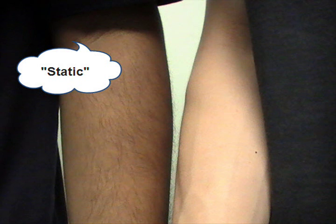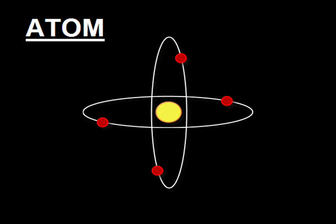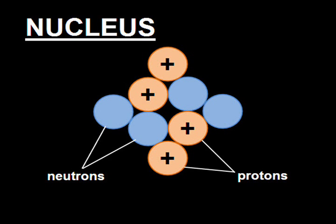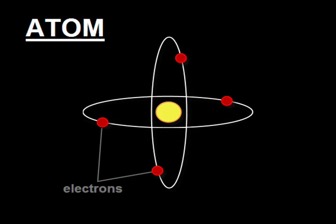So how does static electricity build up? Let me explain it to you. All matter is made up of atoms. Inside the atom, there is the nucleus. The nucleus consists of neutrons and protons. Neutrons do not have any charge, but protons have a positive charge. Apart from the neutrons and protons in the nucleus, there are also electrons orbiting around the nucleus. Electrons carry a negative charge.